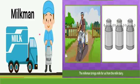Milkman. In the early morning, who comes and gives us milk? Correct! It's a milkman. The milkman brings milk for us from the milk dairy. Every day you drink milk — so who gives us milk at our doorstep? Correct! A milkman.